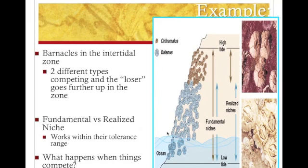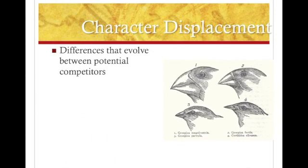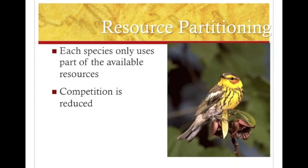Another thing that could happen when organisms compete is something called character displacement. This is when evolution comes into effect and they evolve so that they reduce competition. For instance, Darwin's finches changed beak size — they evolved to have different beaks so they don't compete anymore, because they were competing over the same seeds. Now with different beaks, they can eat different things, reducing competition. The other way to reduce competition is resource partitioning — being happy and sharing. A bird might only eat the flowers and leave the leaves for something else, so instead of competing over the entire plant, they share that resource.